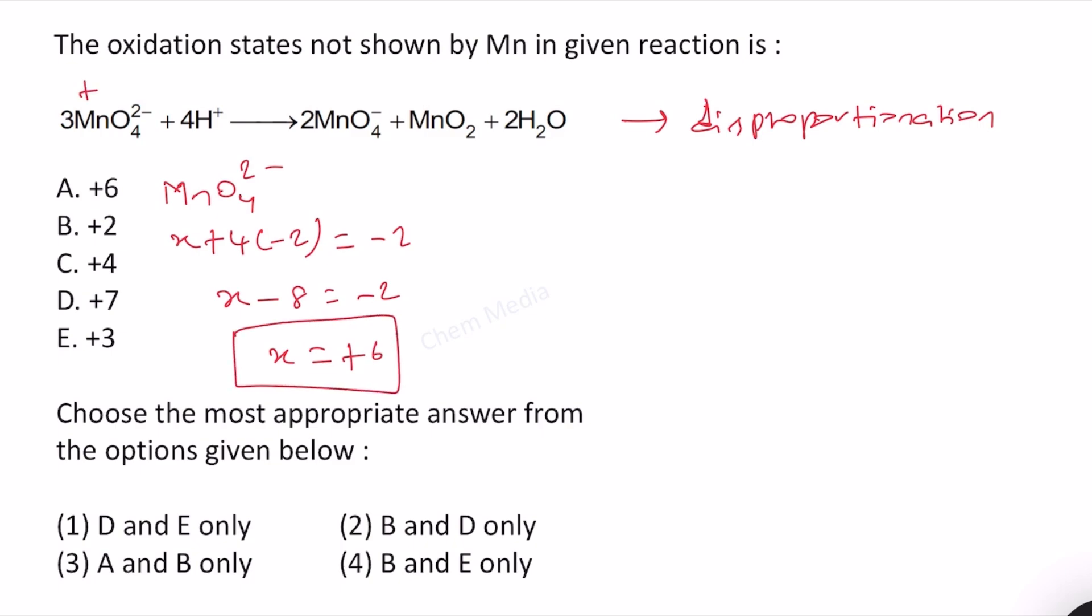And then in permanganate ion MnO4^-, x + 4(-2) = -1. x - 8 = -1, and therefore x equal to +7 here. So increase in oxidation number, and therefore that is oxidation.